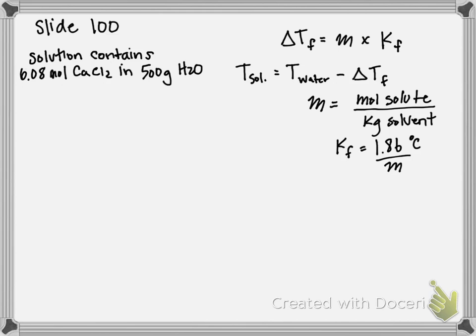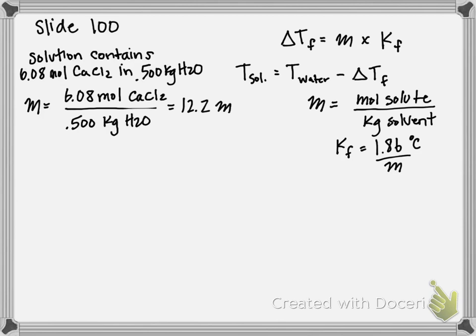So step one for this is to determine our molality of our solution. We're going to plug into our molality equation, moles of solute over kilograms of solvent. So molality is going to be equal to 6.08 moles calcium chloride over 0.5 kilograms of water. And if you divide those by one another, you get 12.2 molal solution.